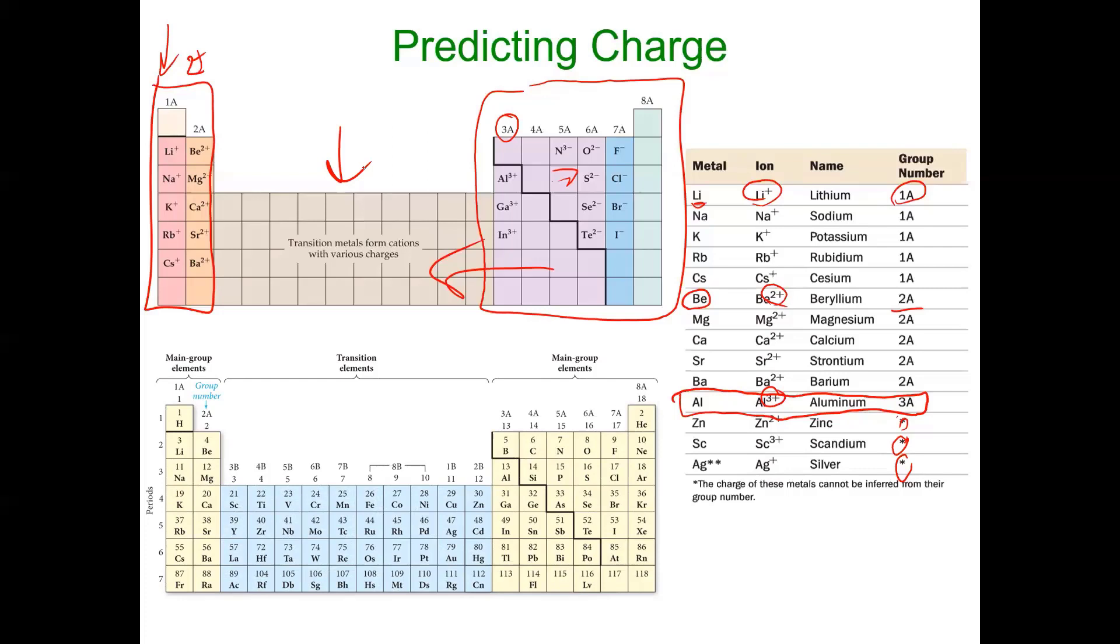The ones that we have here only form one charge. Scandium, you can look at scandium in period four. It's got 21 electrons. If it loses three, it'll be like argon. So it's easier to lose three than to gain 15 to be like krypton. So it loses three electrons. So if I lose three negativities, I become three positive. So scandium is always a plus three.